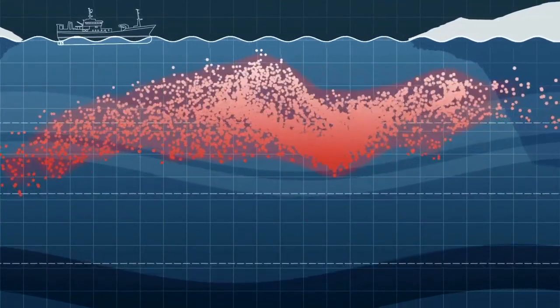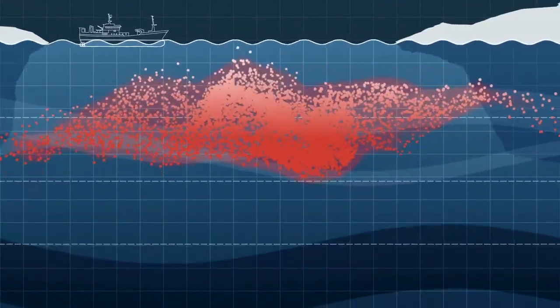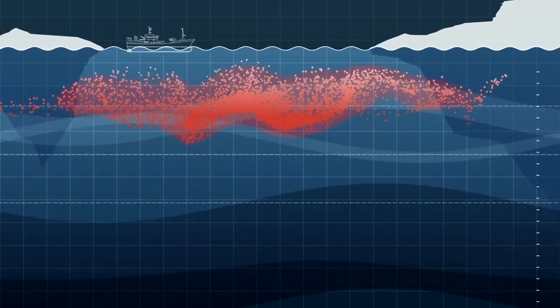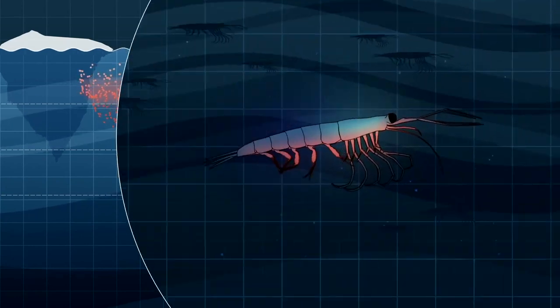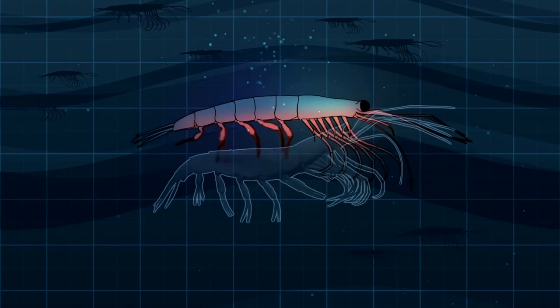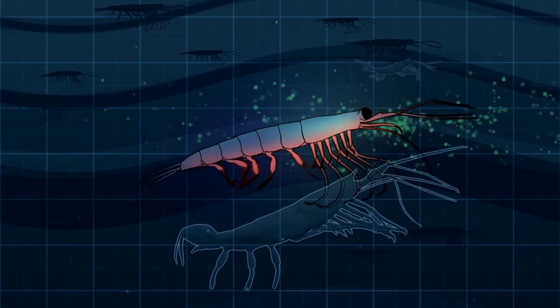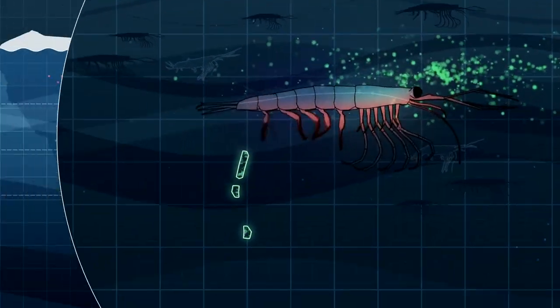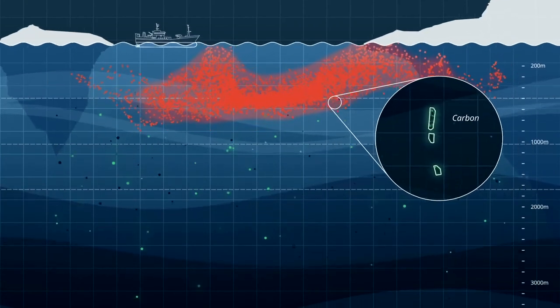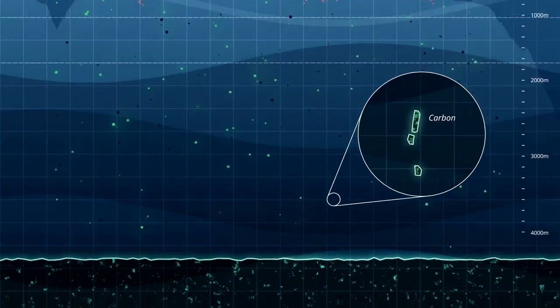Krill are climate heroes too. On a planet that's overheating, Krill may have the power to help keep us cool. By shedding their exoskeleton every 10 to 14 days, and by eating plankton that absorb carbon dioxide, billions of Krill are putting carbon where the sun doesn't shine. Millions of tons of it, every year.